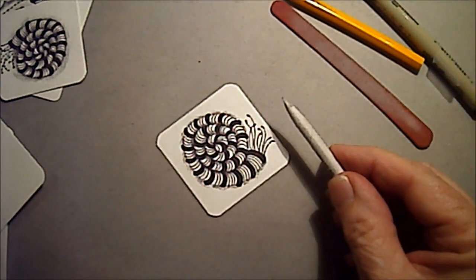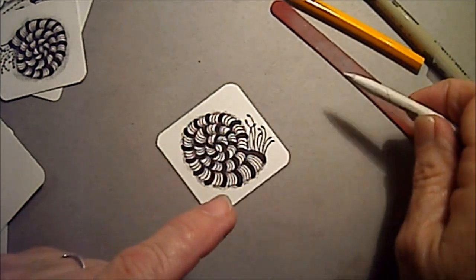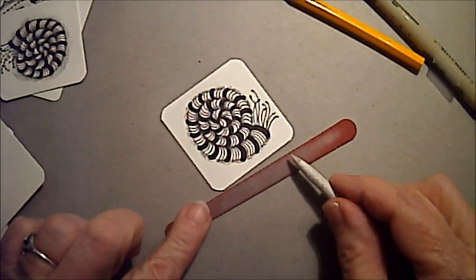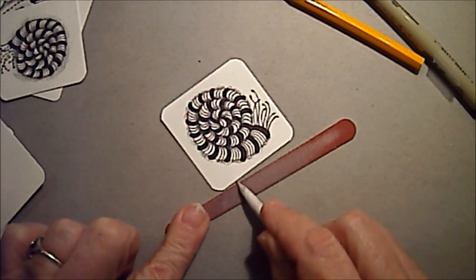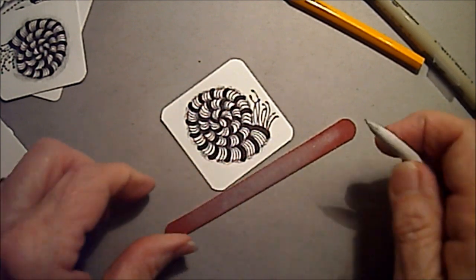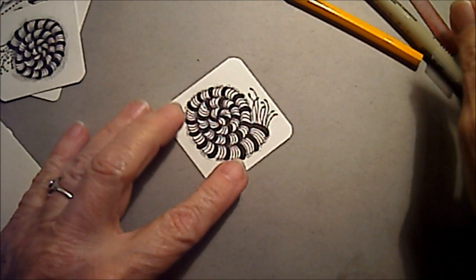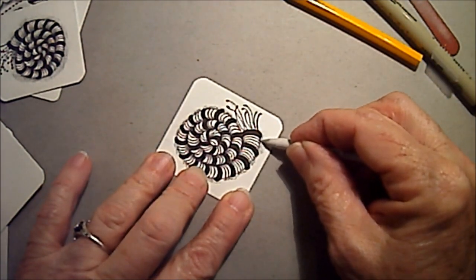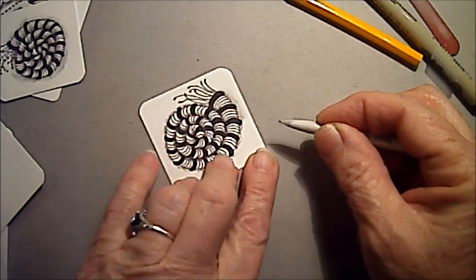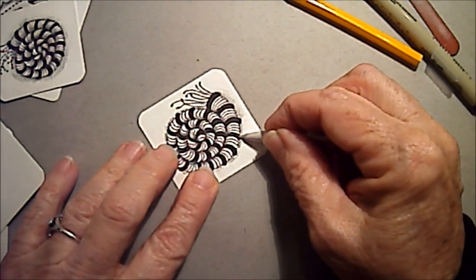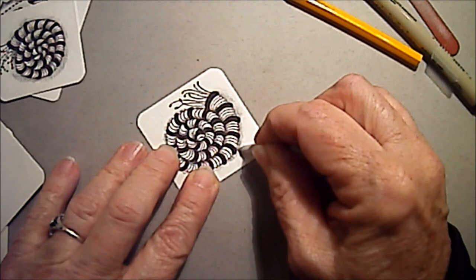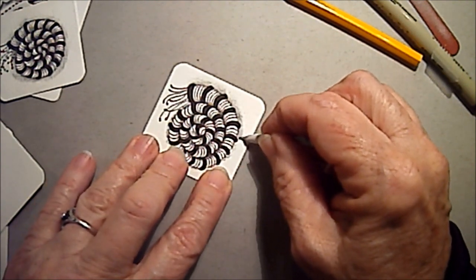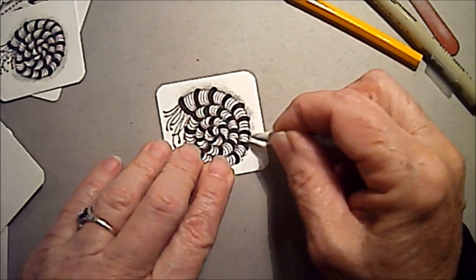Now I'm going to pick up my shading stump, and I've cleaned this one off with an emery board. I keep an emery board in my Zentangle kit, and you just rub it on the side and make sure you keep that point. That cleans it off, and now I can blend out my graphite. I want to keep it right on that edge. I don't want to go up into here. I want to keep it out. I want that light edge.